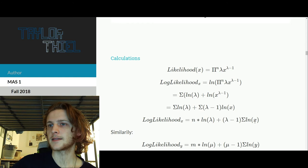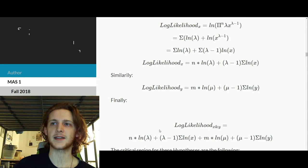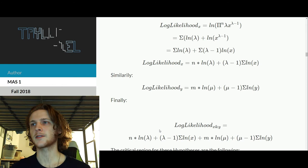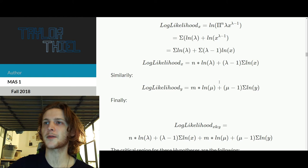And then similarly, so that was for our x data, and then our y data is actually the exact same distribution. It's just instead of n, we're going to use m. Instead of lambda, we're going to use mu. And then instead of x, we're going to use y. But otherwise, it's the same structure.